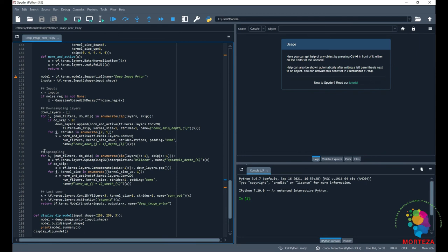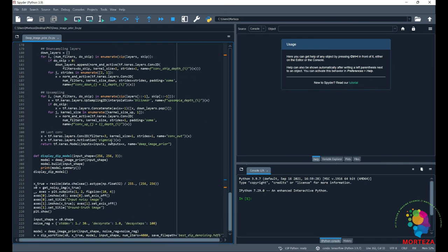And the layers are put together here. Input, downsampling layers, upsampling layers, and then the last convolution, which has only 3 filters, the last convolution,